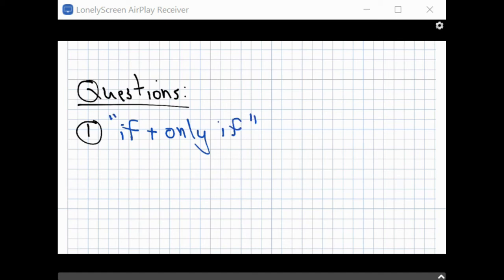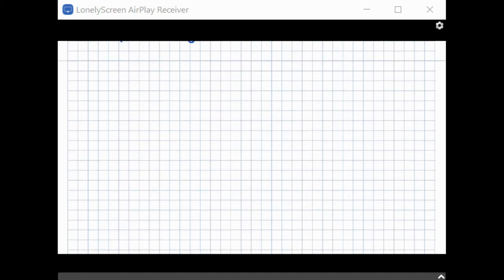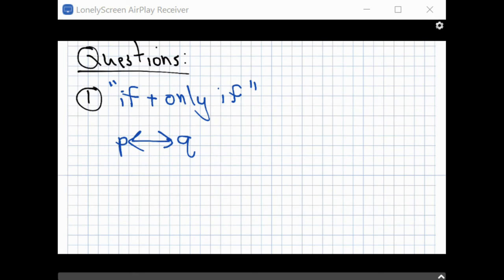Okay. I left myself a lot of space here, but that's it. And again, the way that's denoted is with the double arrow going in both directions between P and Q.